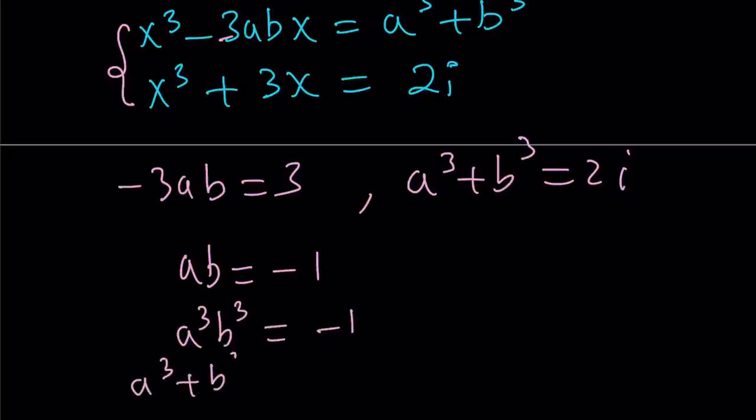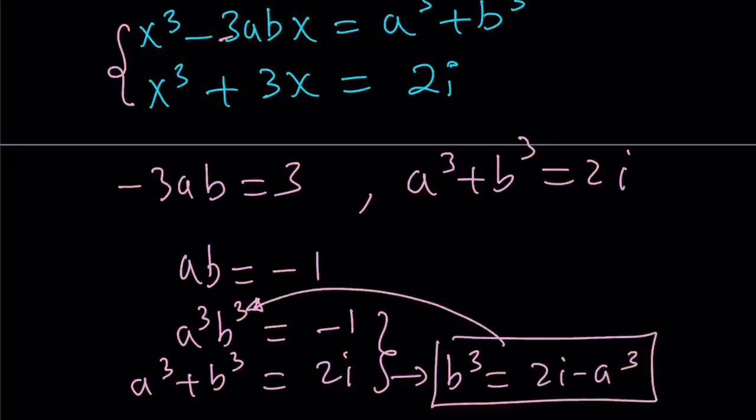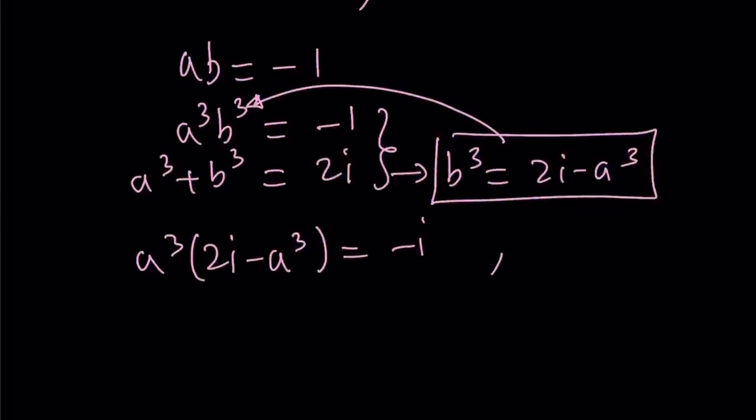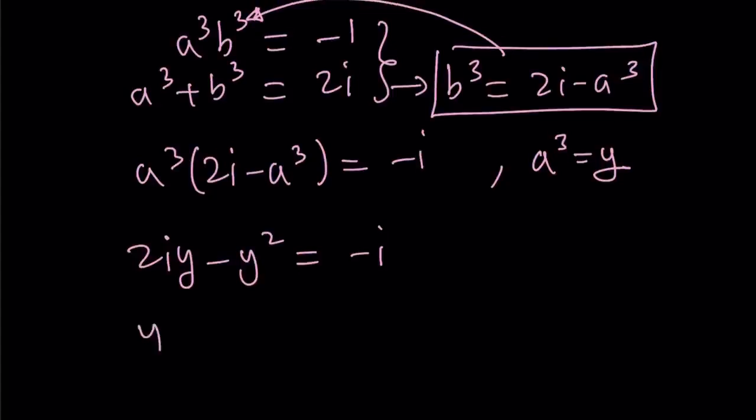Let's go ahead and cube both sides here. a³b³ equals -1, and a³ + b³ is equal to 2i. Let's solve this as a system. This is a quadratic in a³, so we can isolate b³ from here: 2i minus a³, and then substitute in the other equation. That's going to give us a³ times (2i - a³) equals -1.